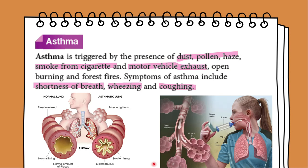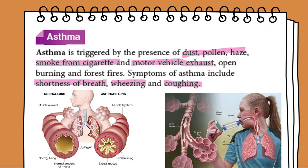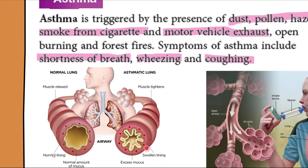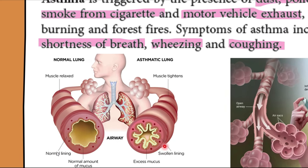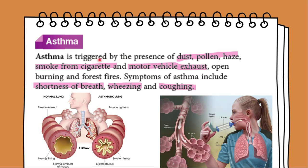Those harmful substances in the air can cause diseases such as asthma, emphysema, bronchitis and lung cancer. Asthma is a disease caused by the narrowing of the fine airways in the bronchi and bronchioles due to the contraction of muscles in their walls. This might be triggered by the presence of dust, pollen, haze, cigarette smoke and motor vehicle exhaust. An asthma patient will find it difficult to breathe, experience wheezing, coughing and feel tightness in the chest.